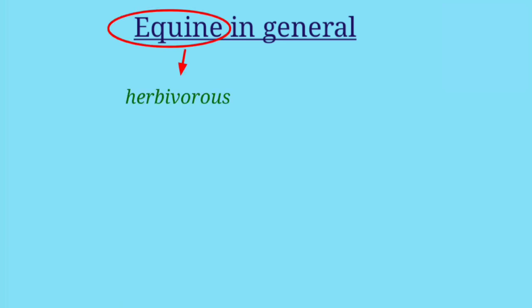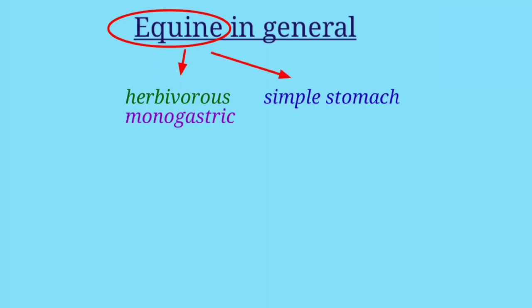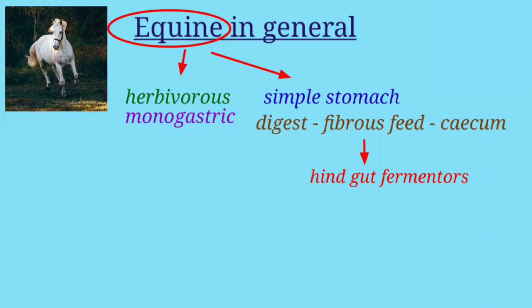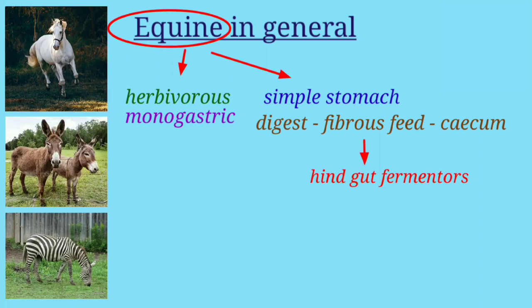Equines are herbivorous monogastric animals with a simple stomach. They can digest a considerable amount of fibrous feed in the cecum, and are also called hindgut fermenters. Equines include horses, donkeys, zebras, and mules, which are used as work and pack animals.